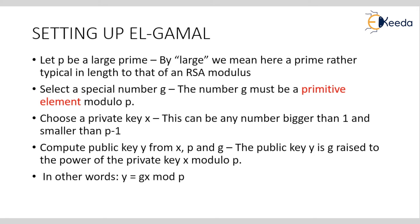We also have to choose a private key X, which can be any number bigger than 1 and smaller than P minus 1. Along with X, we need to compute the value of the public key Y using the equation: Y = G to the power of X mod P.